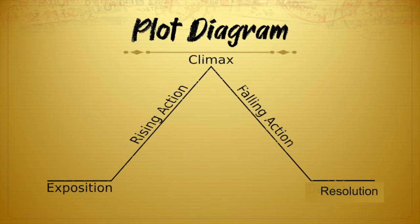So how does the plot diagram look? Well, it looks like a mountain. We have the exposition at the beginning, then the rising action, then the climax at the top, then the falling action, and finally the resolution.